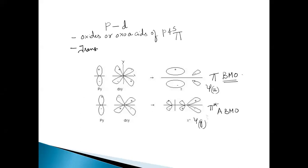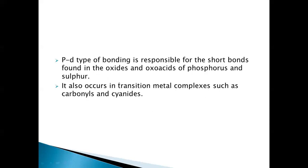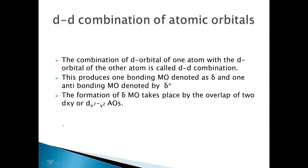This type of PD combination can be seen in transition metal complexes such as carbonyls and cyanides. These are the examples where we observe the PD combination of atomic orbitals. Now let's discuss the DD combination, where the d-orbital of one atom overlaps with the d-orbital of another atom — that type of combination is called a DD combination.